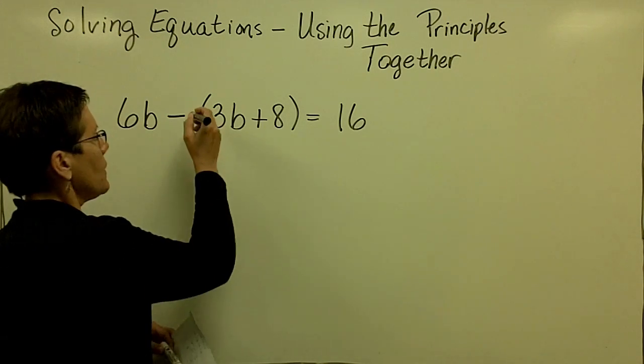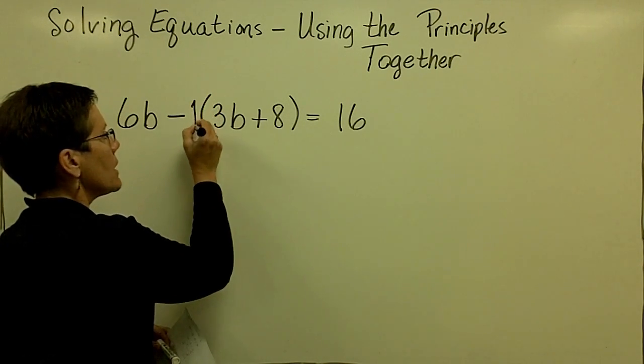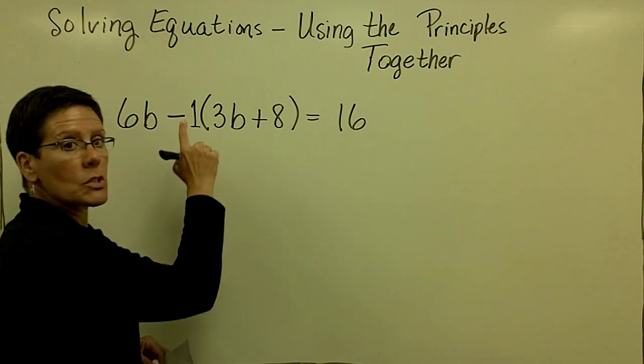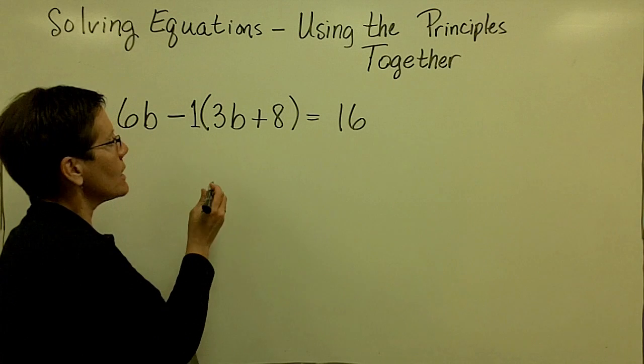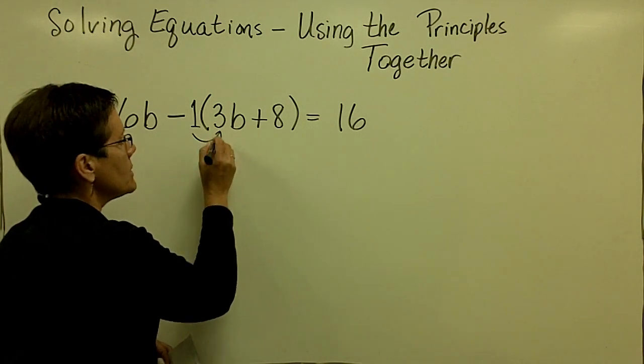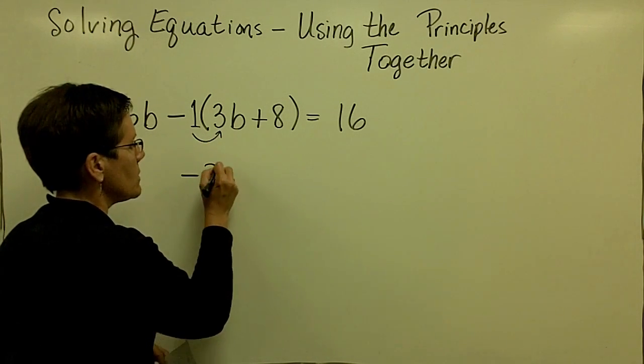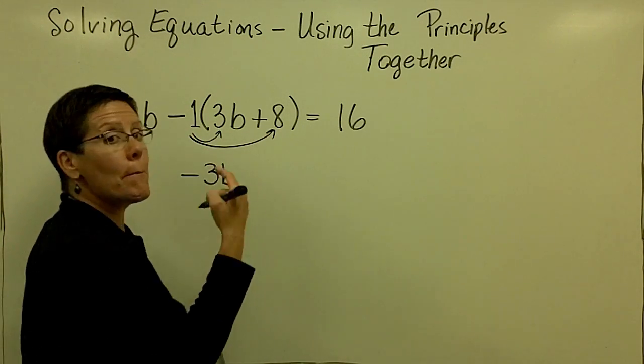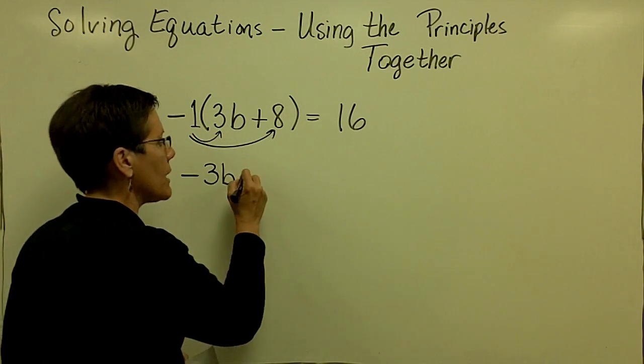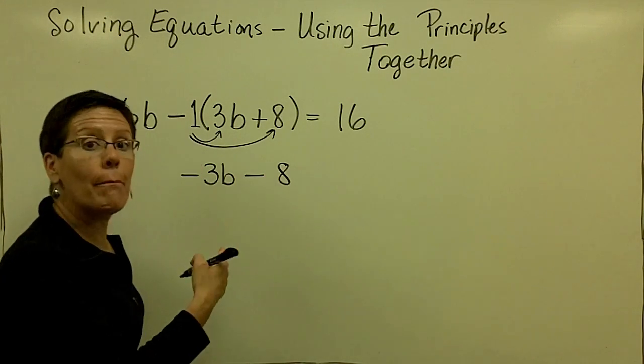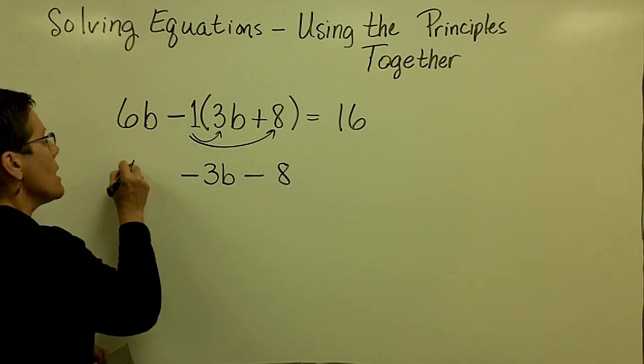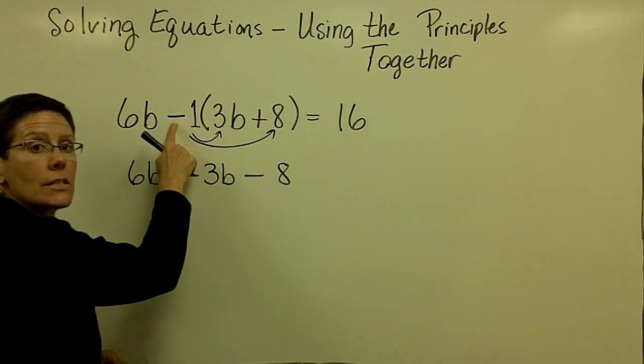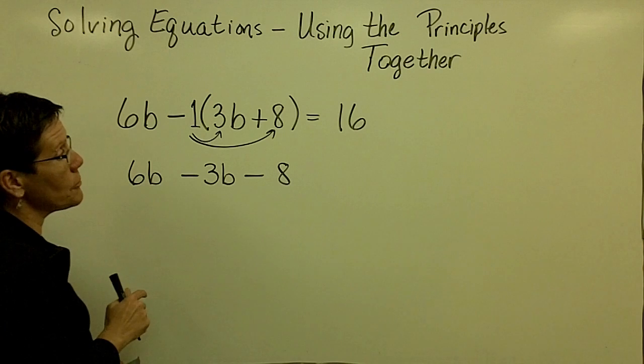The other way is to think that there's a coefficient of a negative 1 in front of the parentheses. And so I'm asking you to multiply both of those terms by a negative 1. So a negative 1 times 3B is a minus 3B or a negative 3B. And a negative 1 times a positive 8 is a negative 8, which is the same thing as minus 8. And you've gotten rid of the parentheses symbols because of the minus sign that was in front.